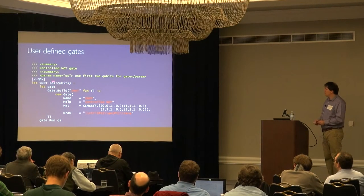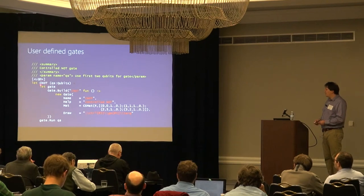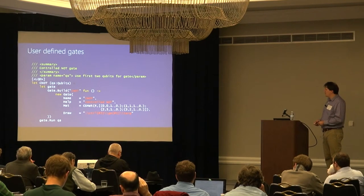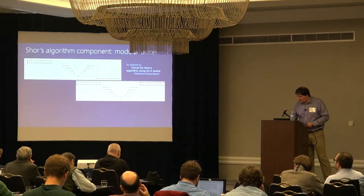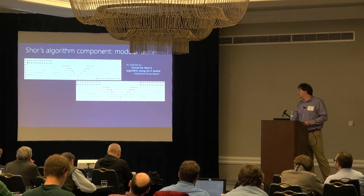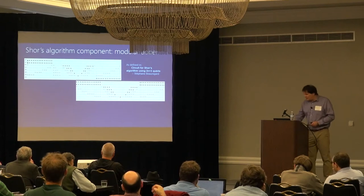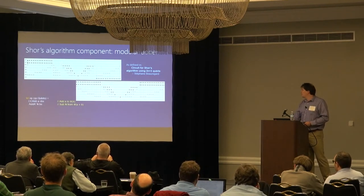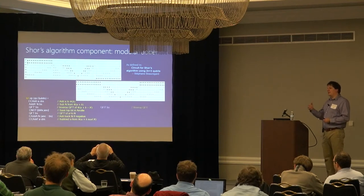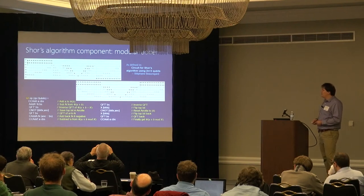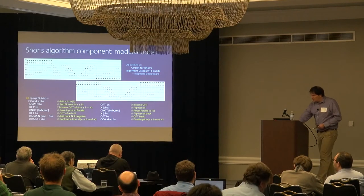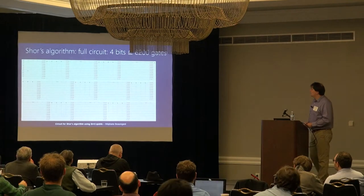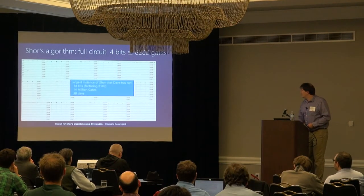You can define your own gates — CNOT is in the library, but you could declare your own by matrix elements, as sparse matrices, and then use them in your circuits. This is a component of Shor's algorithm; it's an adder — more specifically a modular adder — using the Beauregard method, which uses the Draper idea of phase-space implementation. The code is a very short program and the corresponding circuit is automatically generated. Dave Wecker implemented Shor's algorithm up to 14 bits.